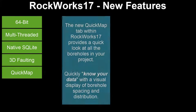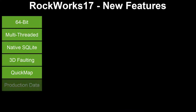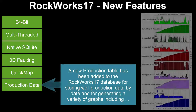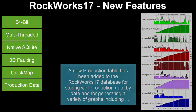The new Quick Map tab within RockWorks 17 provides a quick look at all the boreholes in your project, giving you a visual display of borehole spacing and distribution. A new production table has been added to the RockWorks 17 database for storing well production data by date, and for generating a variety of graphs including average daily oil production, cumulative oil production, average daily oil gravity, and so on.